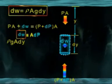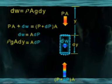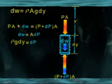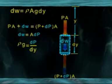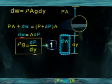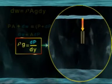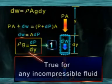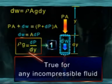Therefore, ρg·A·dy = A·dP. Therefore, ρg = dP/dy, Equation 1. This equation shows that the pressure increases with the increase in the depth of the fluid. This equation is true for any incompressible fluid.